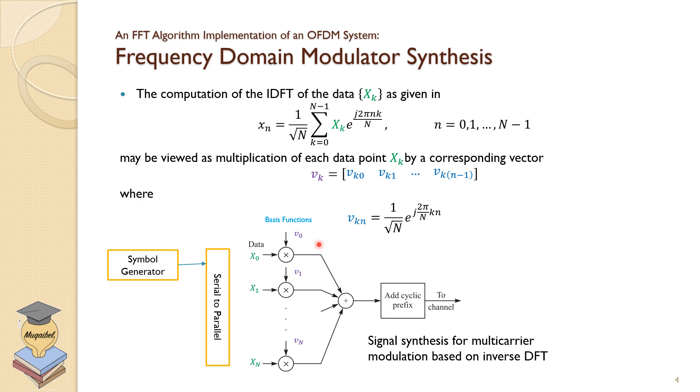One way we can look at generating the OFDM signal is that you take the symbols, you use serial-to-parallel converter, and then you modulate individual carriers, and then you add them up to get the signal. Of course, later on we'll talk about adding cyclic prefix.